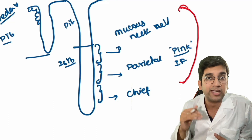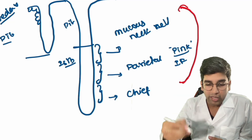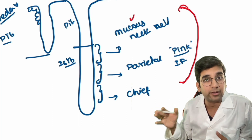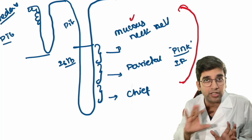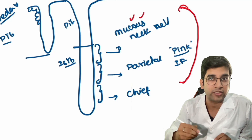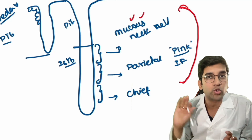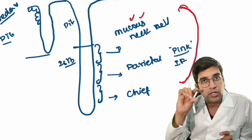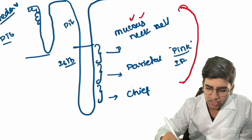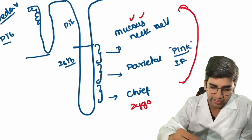In the body of the stomach, parietal and chief cells are predominant. When you go to the cardia, its function is to limit acid from going upward, so cardia will have lots of mucus-secreting cells. Similarly, the antrum prevents acid from going into the duodenum, so it also has more mucus-secreting cells. The percentages vary, but the pit is almost always the same — you have foveolar epithelium throughout.